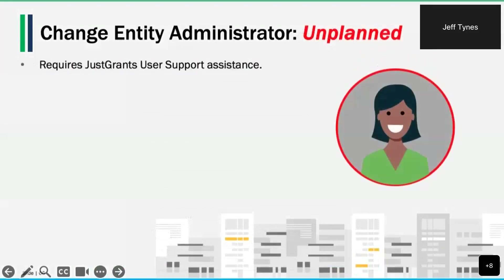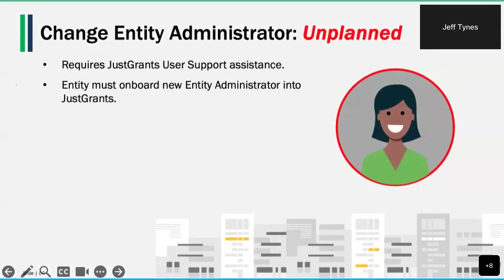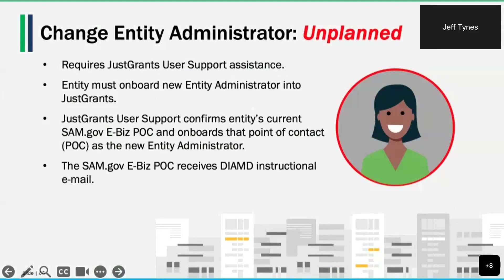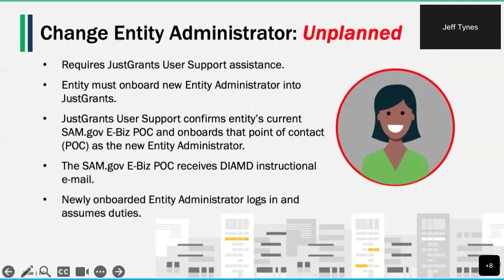When the entity administrator's absence is unplanned, there is a different process involving JustGrants user support. Unplanned entity administrator changes require JustGrants user support assistance. Entities need to onboard a new eBiz point of contact into SAM.gov. Once complete, the entity must request that JustGrants user support confirm the entity's current SAM.gov eBiz point of contact and onboard them as the new entity admin. The SAM.gov eBiz point of contact will receive an instructional email from Diamond to register, and once registration is complete, the newly onboarded entity admin can log in and assume entity administrator duties.